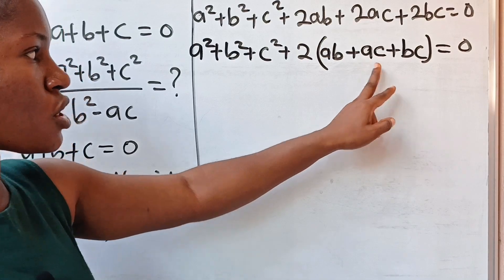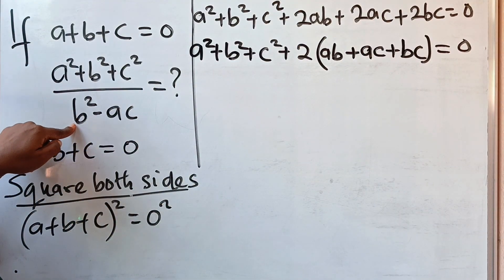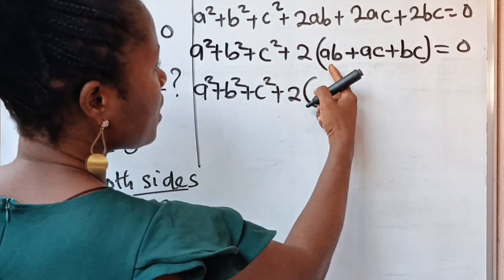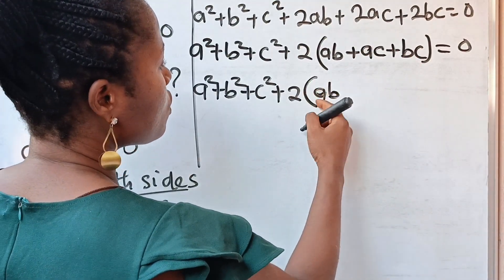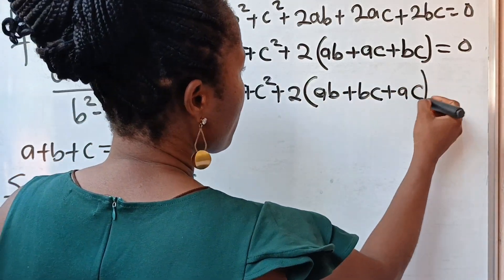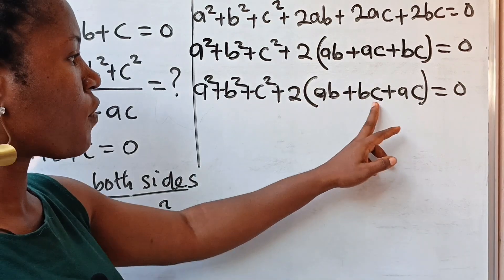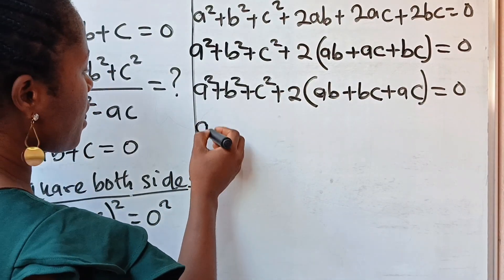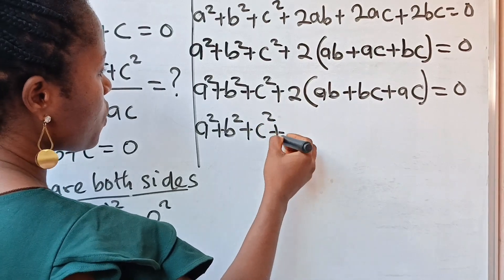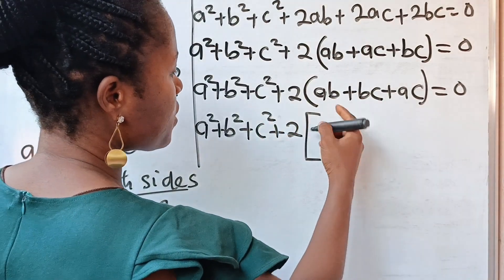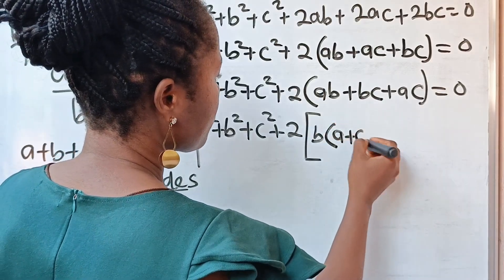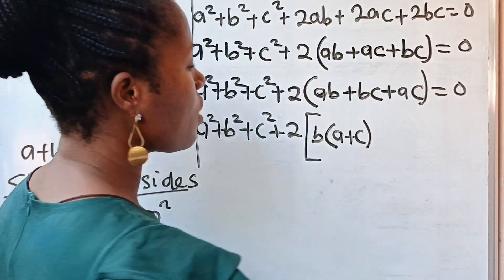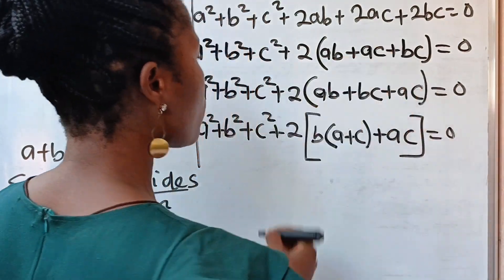We are going to use ab and bc to see how we can get b squared from there. So we can write a squared plus b squared plus c squared plus 2 brackets, bringing ab and bc together: b times a plus c, plus ac, is equal to zero. ab divided by b gives a, and bc divided by b gives c. We are not going to touch ac.